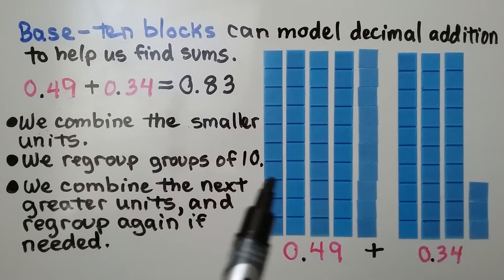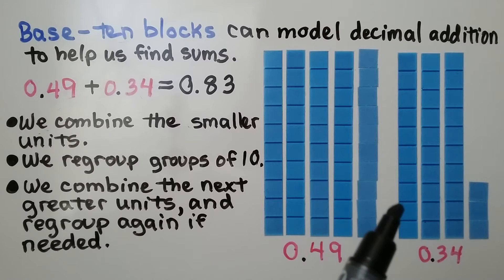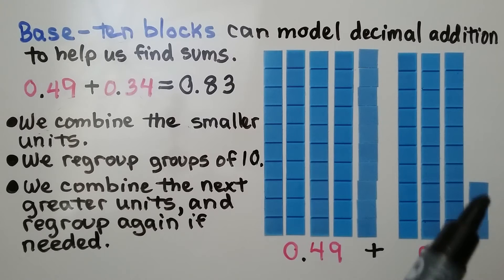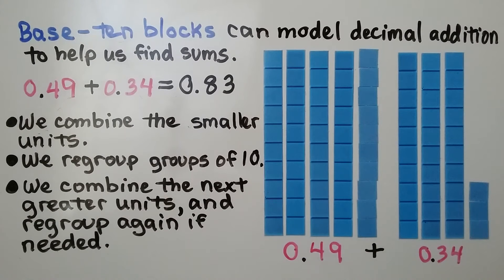Now we have 5 tenths, 6 tenths, 7 tenths, 8 tenths, and we have 3 hundredths. We have 83 hundredths.